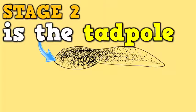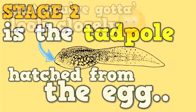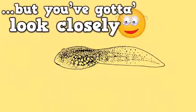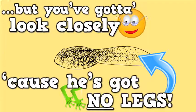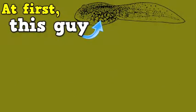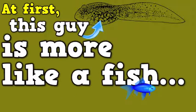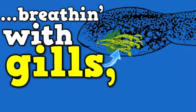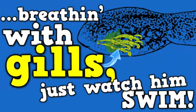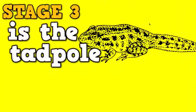Stage two is the tadpole that hatches from the egg, but you gotta look closely cause he's got no legs. At first this guy is more like a fish, breathing with gills — just watch him swim. Stage three is the tadpole with some legs.